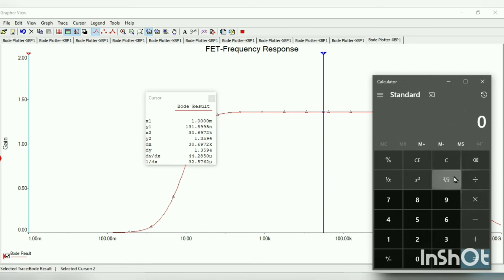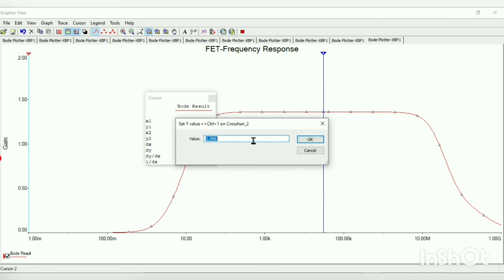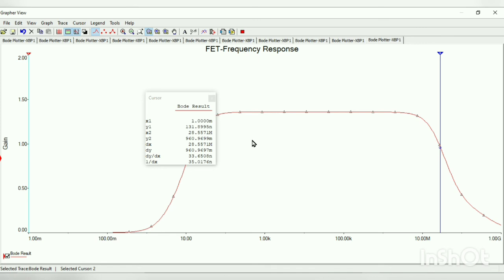To get the cutoff, we need to multiply 0.707 with our mid-band gain value, that is 1.3594. When we multiply, we obtain 0.961. This is our cutoff value. Moving the cursor to that region, right-click, set value 0.961. Repeat the same step for another cursor.